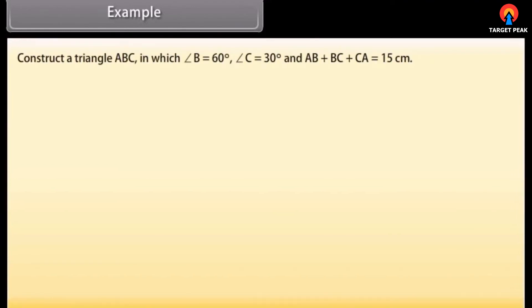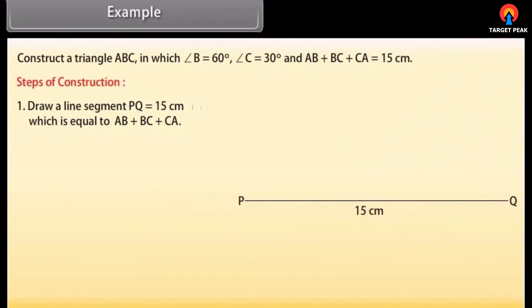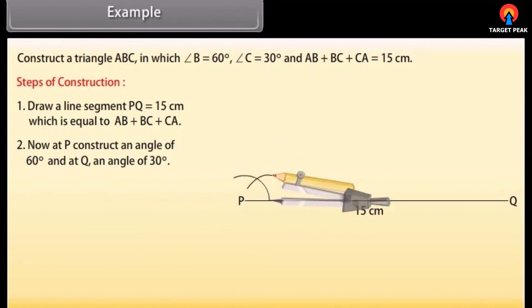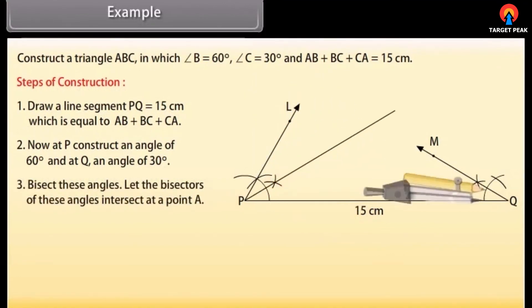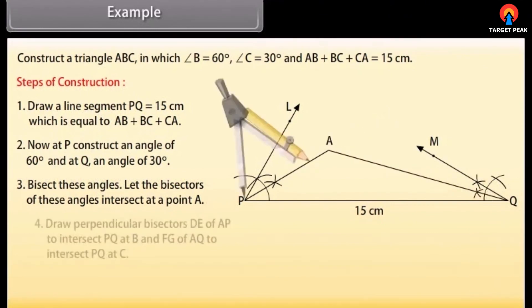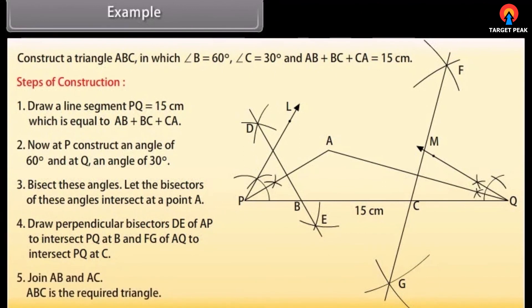Example: Construct a triangle ABC in which angle B is 60 degrees, angle C is 30 degrees, and AB plus BC plus CA equals 15 cm. Steps: draw a line segment PQ equal to 15 cm. At P construct an angle of 60 degrees and at Q an angle of 30 degrees. Bisect these angles; let the bisectors intersect at point A. Draw perpendicular bisectors of AP and AQ to intersect PQ at B and C. Join AB and AC. Then ABC is the required triangle.